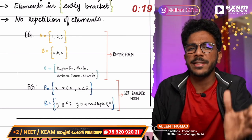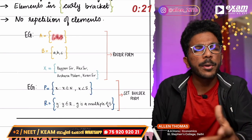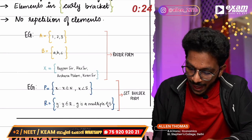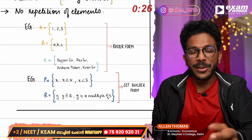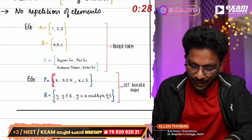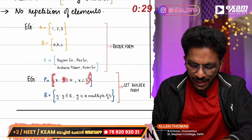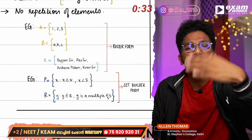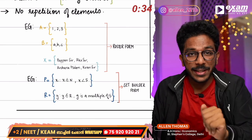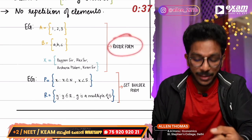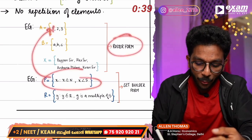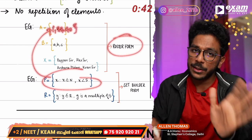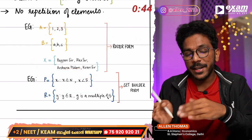The set is {1, 2, 3}. We have all the elements in the curly bracket. We have all the natural numbers — the same type as roster form. The set is set builder form.